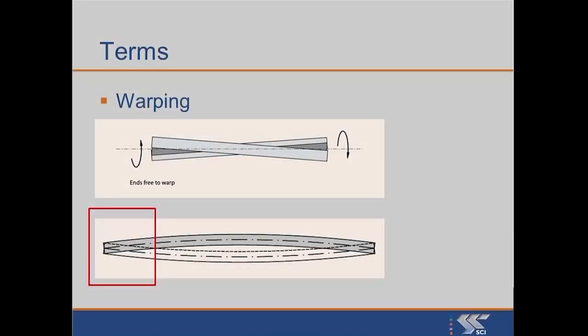Warping is the way that open sections resist torsion, and hollow sections primarily resist torsion in pure torsion. There is a distinct difference in the behavior of open sections and hollow sections.